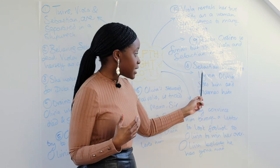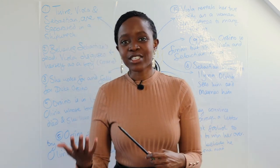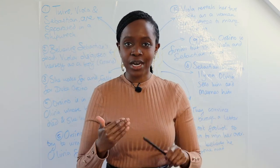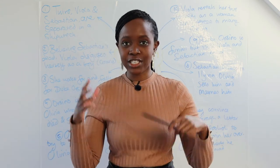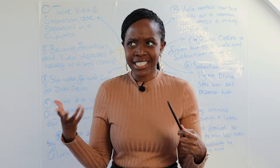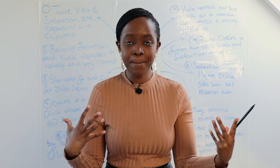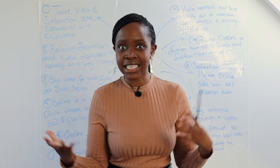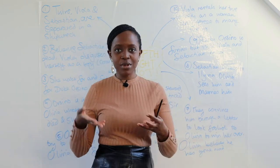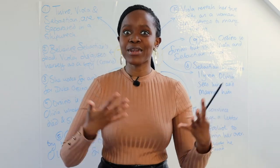Once Sebastian arrives in Illyria, Olivia encounters him. Because Sebastian looks exactly like the male version of Viola, Olivia is delighted, believing he is Cesario. Sebastian is confused as to why this noblewoman is in love with him, but he goes along with it. Olivia says let's get married — and they do, adding even more to the humor.